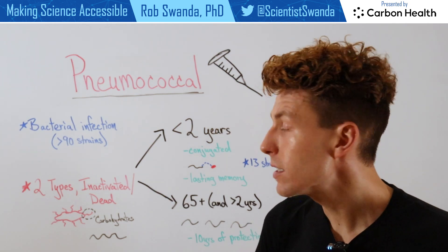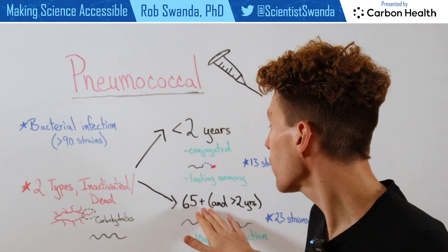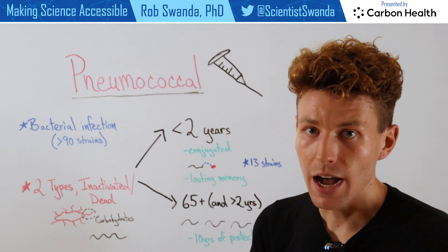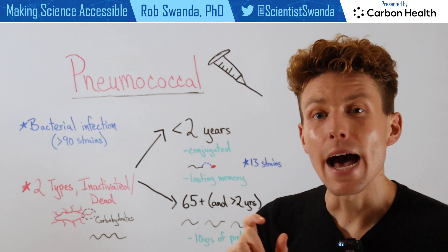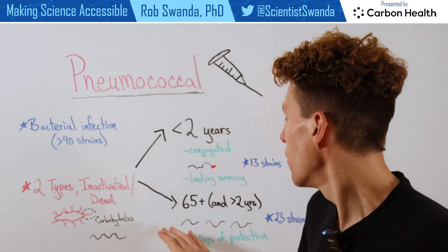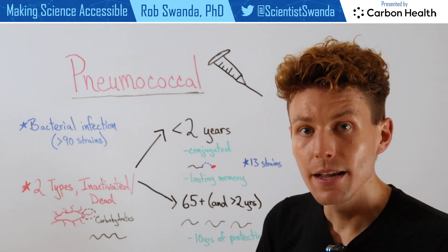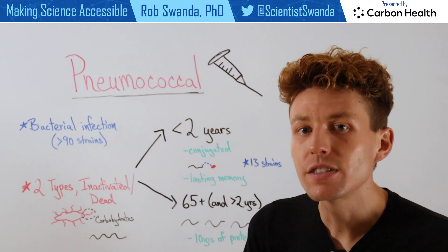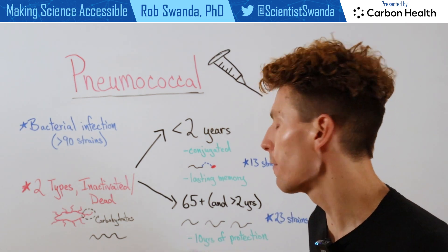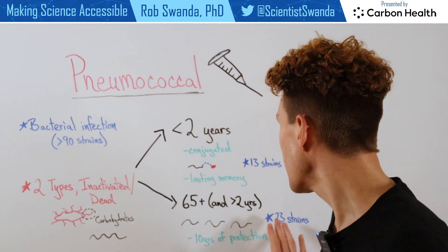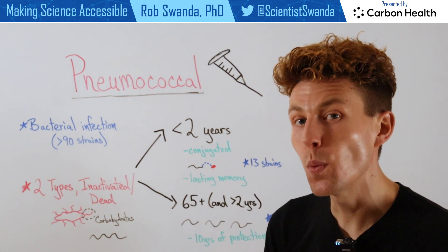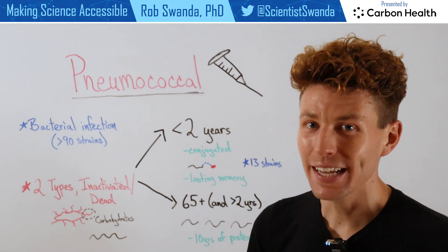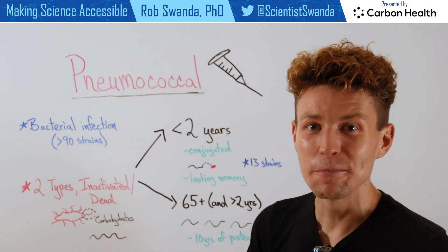The second group of vaccines are primarily for individuals who are over the age of 65, and that just uses that isolated form of the polysaccharide. This usually has a range of about five to ten years of protection. However, it's protective against 23 different strains of bacteria that can lead to pneumococcal disease. Thank you for joining us.